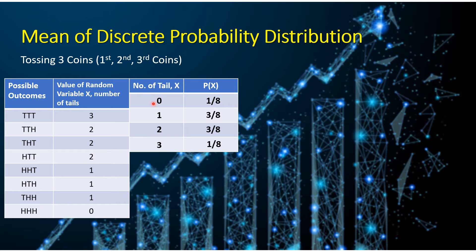So you have x values of 0, 1, 2, and 3. And the probabilities of our random variable: for 0 tails, you have 1 over 8. For 1 tail, you have 3 over 8. For 2 tails, you also have 3 over 8. And for an outcome with 3 tails, you only have 1 over 8. So these are the probabilities of the number of tails, x.